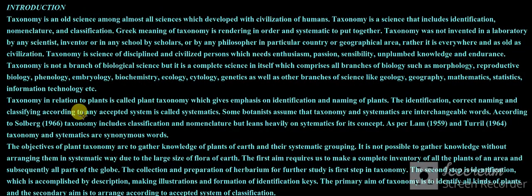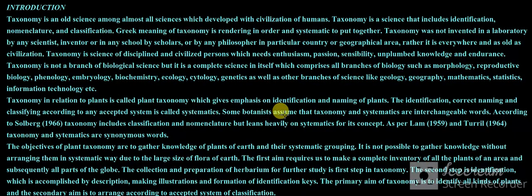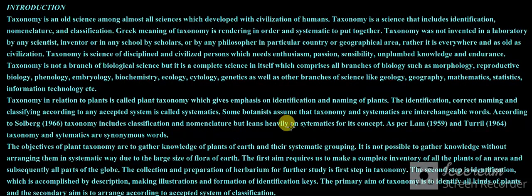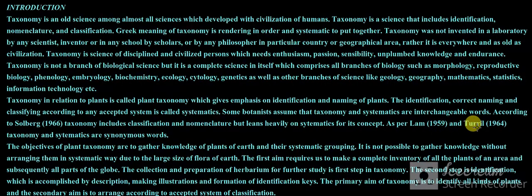Taxonomy in relation to plants is called plant taxonomy, which gives emphasis on identification and naming of plants. The identification, correct naming, and classifying according to any accepted system is called systematics. Some botanists assume that taxonomy and systematics are interchangeable words.